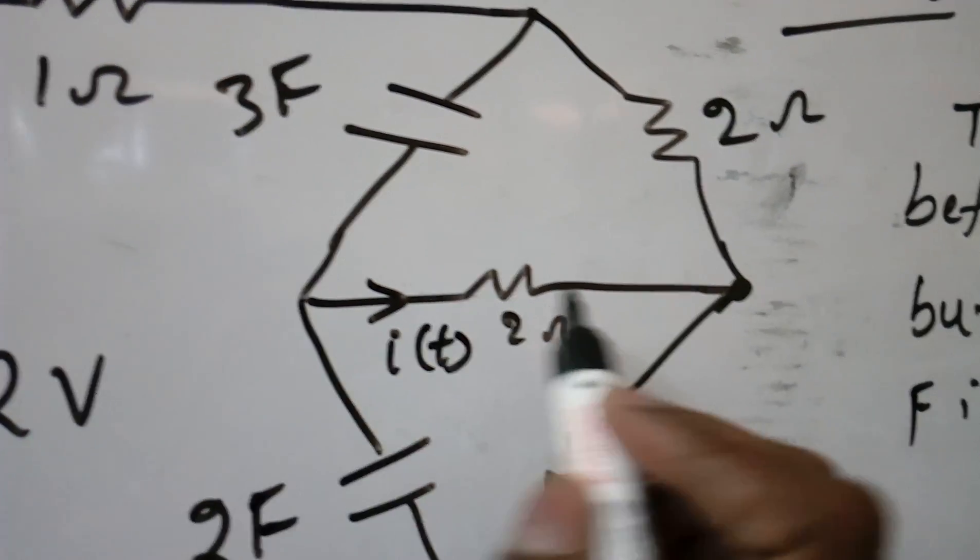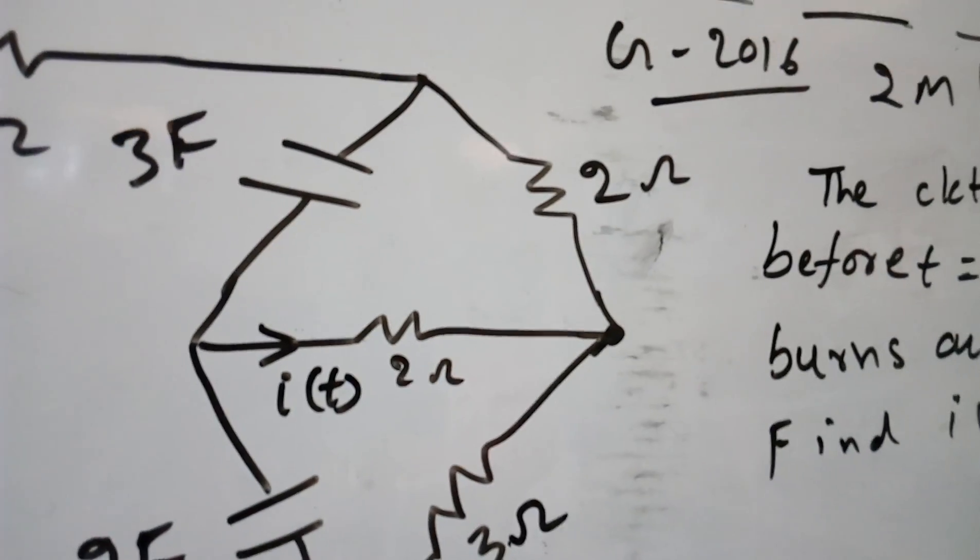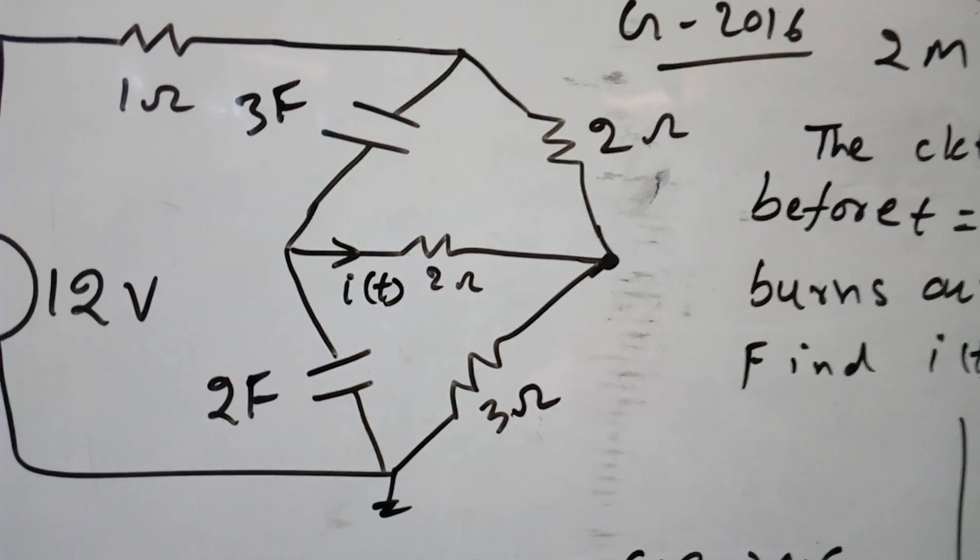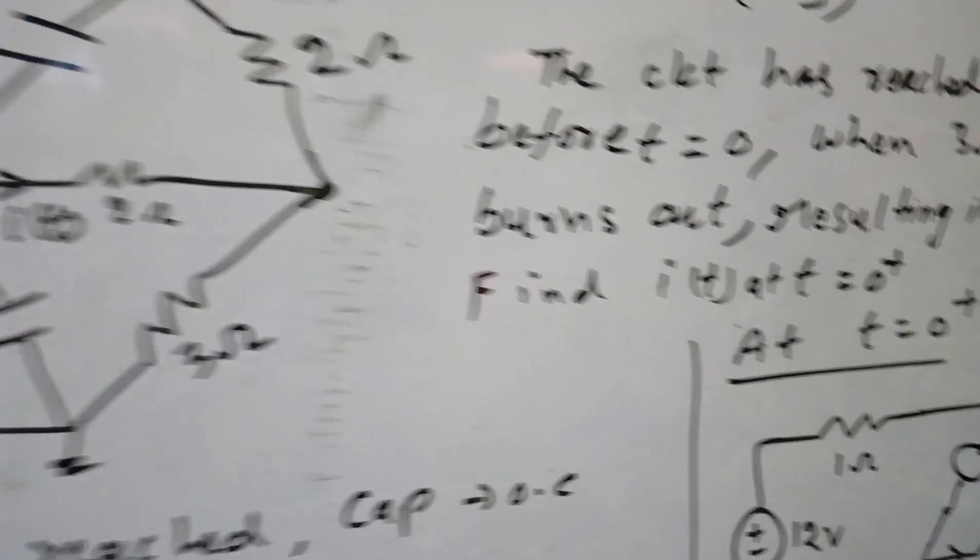Now where is I(t)? Through this 2 ohm resistance. Now to solve this problem we need two conditions of the capacitor.